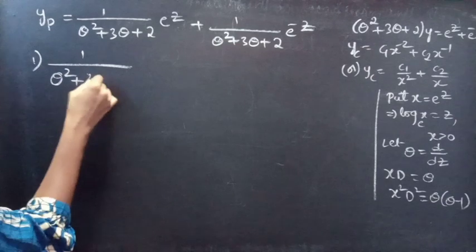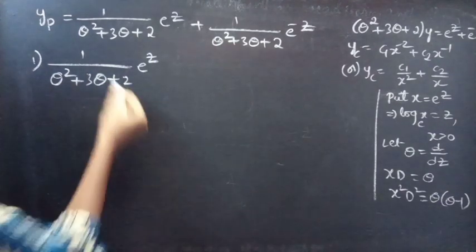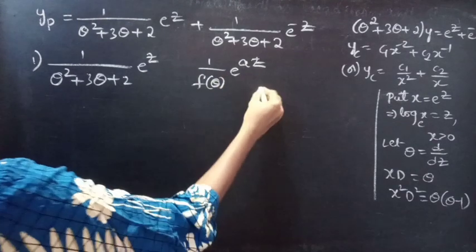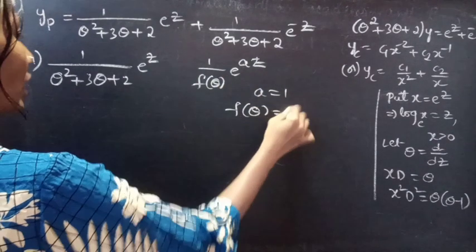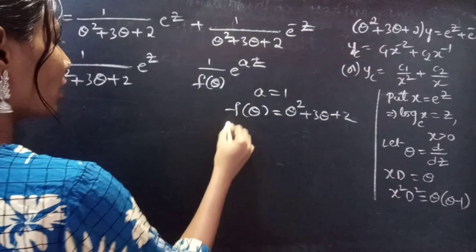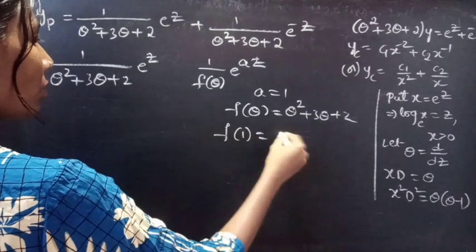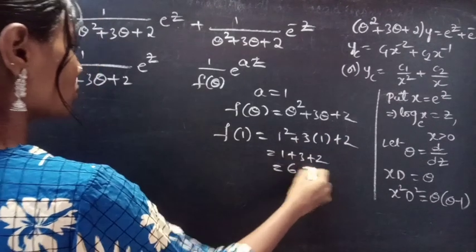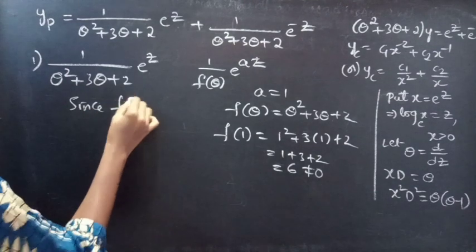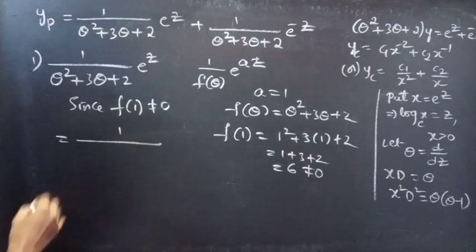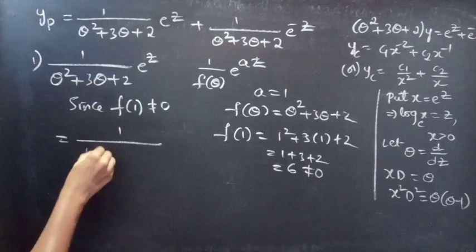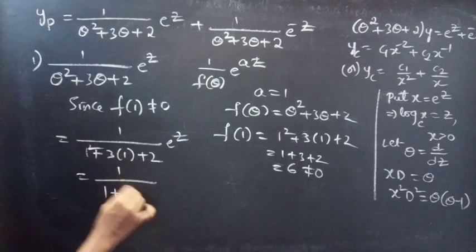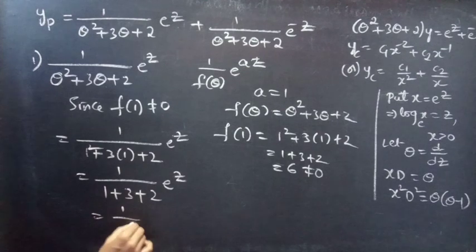For the first term, [1/(theta² + 3theta + 2)]·e^z with a = 1: we find f(1) = 1² + 3(1) + 2 = 1 + 3 + 2 = 6, which is non-zero. Since f(1) ≠ 0, we can replace theta by 1, giving [1/6]·e^z.